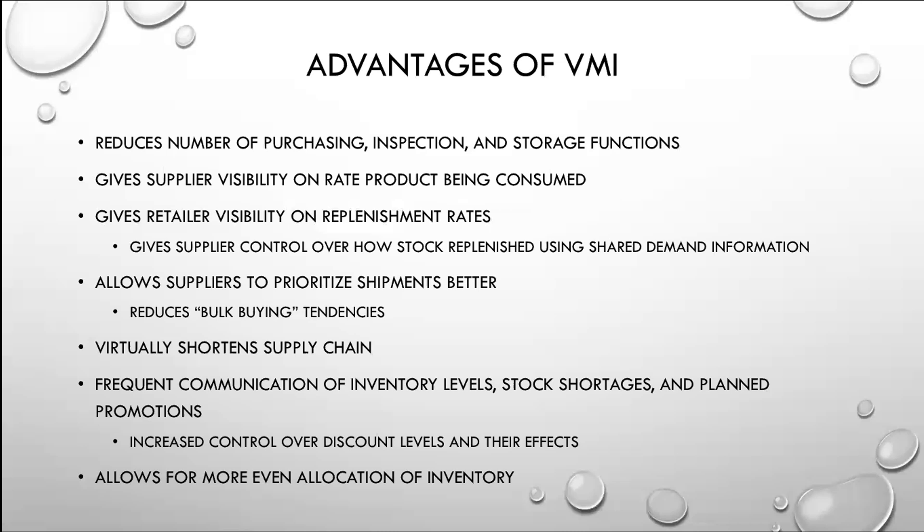VMI virtually shortens the supply chain, and you get frequent communication of all the information that goes through all of the entities — inventory levels, stock shortages, planned promotions — which allows everyone to increase control over discount levels and their effects. If you have delays in your feedback for your forecasting, you introduce variation in your forecasting. VMI allows for even more even allocation of inventory.